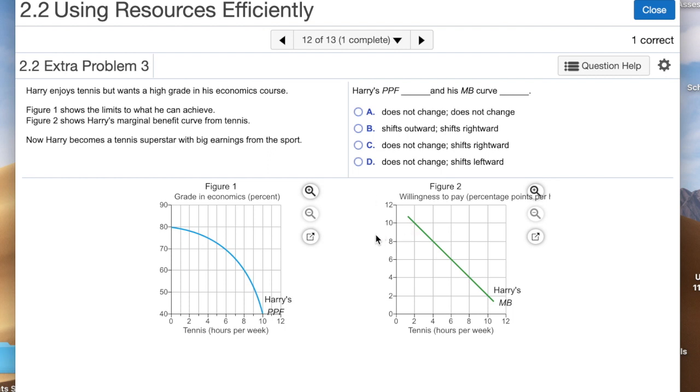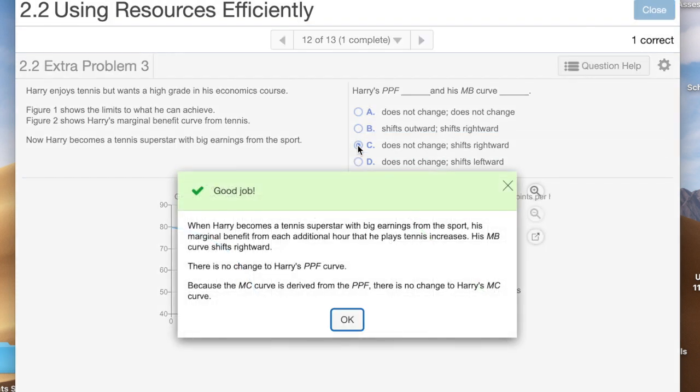However, what has changed is the marginal benefit, the extra benefit Harry receives from every hour of playing tennis. If he's now a professional tennis player earning high income, then every hour that he plays tennis is more valuable to him. So Harry's marginal benefit curve is going to shift to the right. We're going to select an answer of does not change for the PPF and shifts rightward for the marginal benefit curve. And then again, you see that we're correct, and it's explaining that.